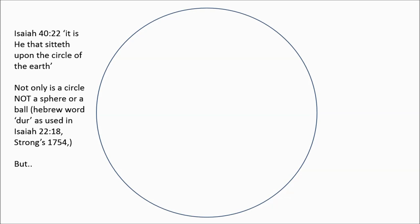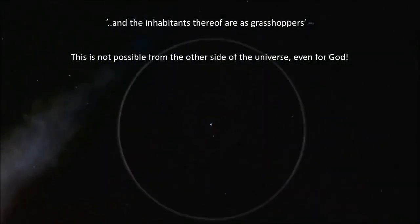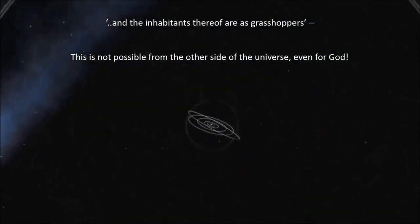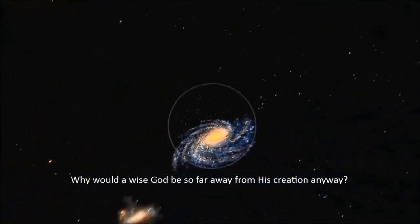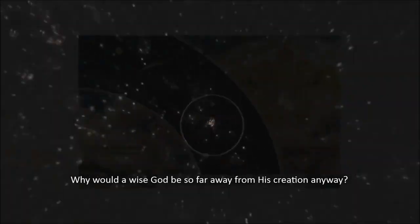The important point about that verse is he sits upon the circle of the earth and sees the inhabitants as grasshoppers. So where is he? Because NASA don't seem to have found him. If you've got this idea that he's all the way across the universe, billions of light years away, across galaxy after galaxy, but he can still sit upon the circle of the earth and see the inhabitants as grasshoppers, it doesn't make sense.